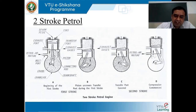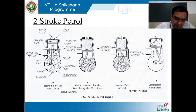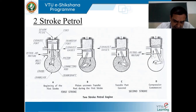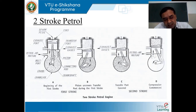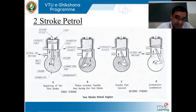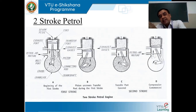When we take the reference of power for a four-stroke engine, power will be developed in every alternate revolution of the crankshaft. Please remember, it is developed in every alternate revolution. But when we take the reference of two-stroke engines, power is developed in every revolution of the crankshaft. Four-stroke: every alternate revolution; but in the case of two-stroke, it is every revolution.